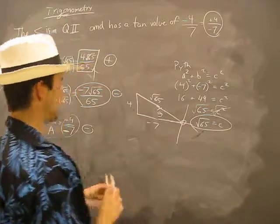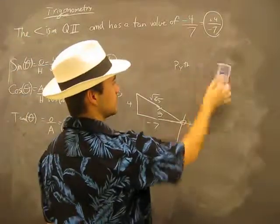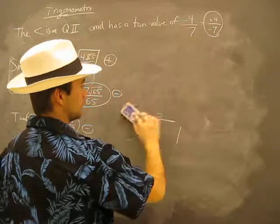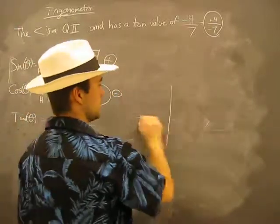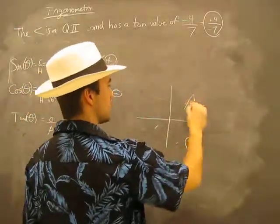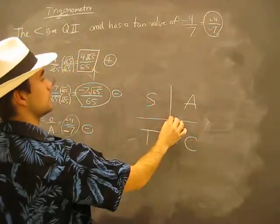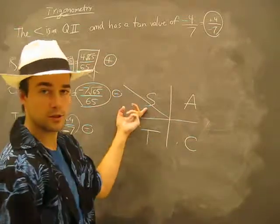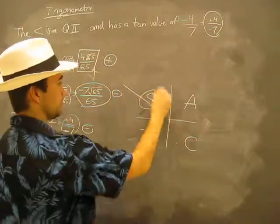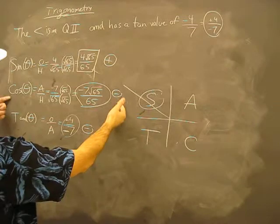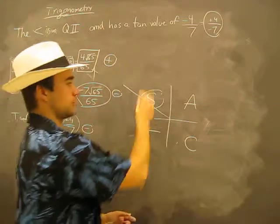What is there? This is the CAST rule. What that means is if you're in quadrant two, the only positive ratio should be sine. Is that true? Let's see. Tangent is negative, cosine is negative, sine is positive. It's true.